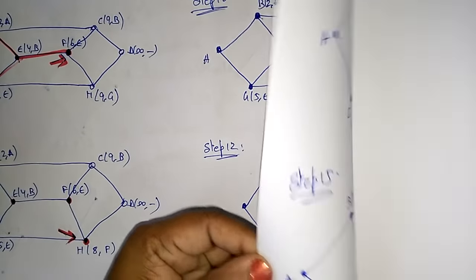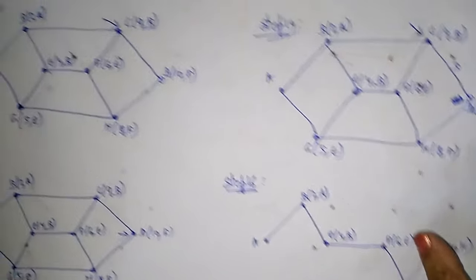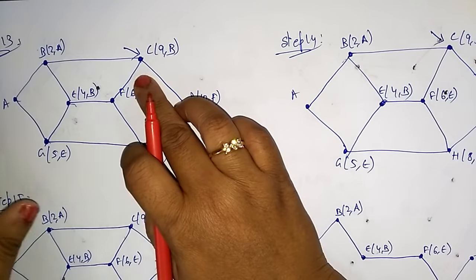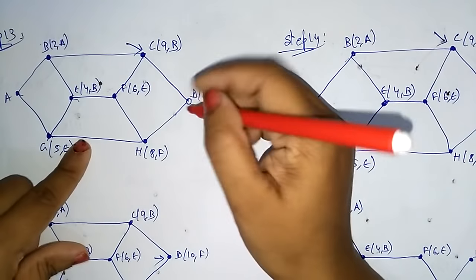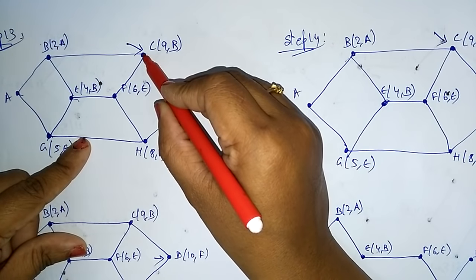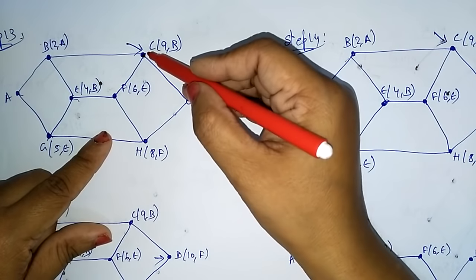H becomes the new working node. Examine H's adjacent nodes — F is already visited. The remaining adjacent node is D. Relabel D with the distance from H: cost of H is 8, distance H to D is 2, so 8+2=10 (labeled 10,H).